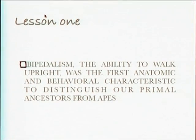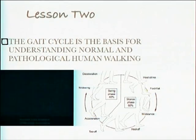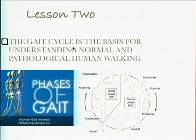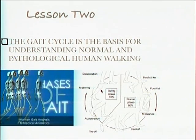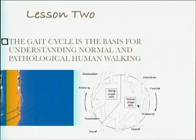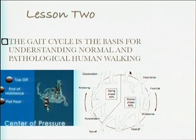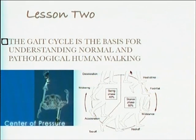First, a few lessons which I feel are important: bipedalism is the ability to walk upright, and that's the first anatomical and behavioral characteristic to distinguish us from the rest of the animal population. What we call the gait cycle is the basis for understanding normal and pathological walking, and it contains the swing phase and the stance phase. The limb goes through a continuous cycle from swing to stance.